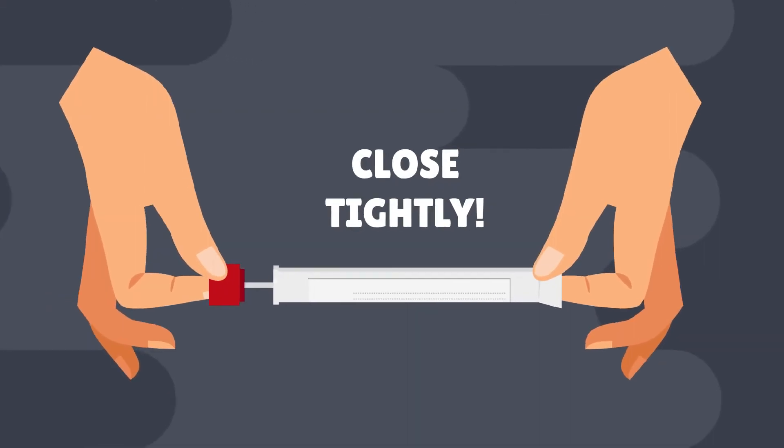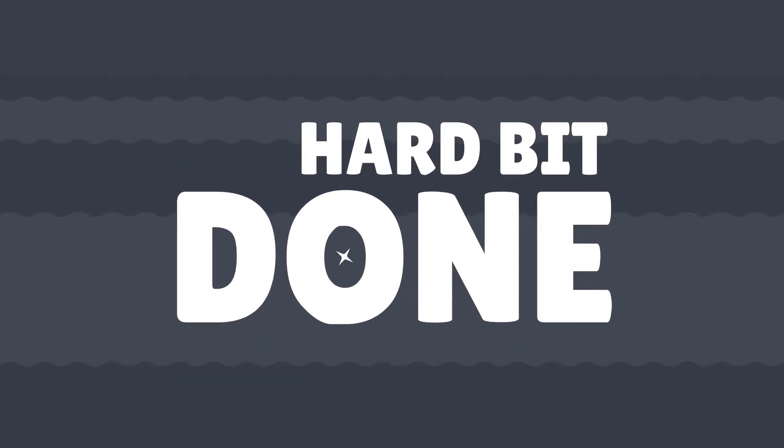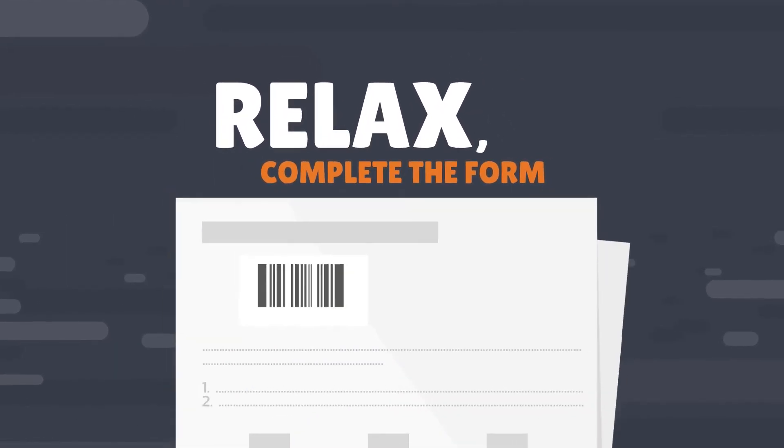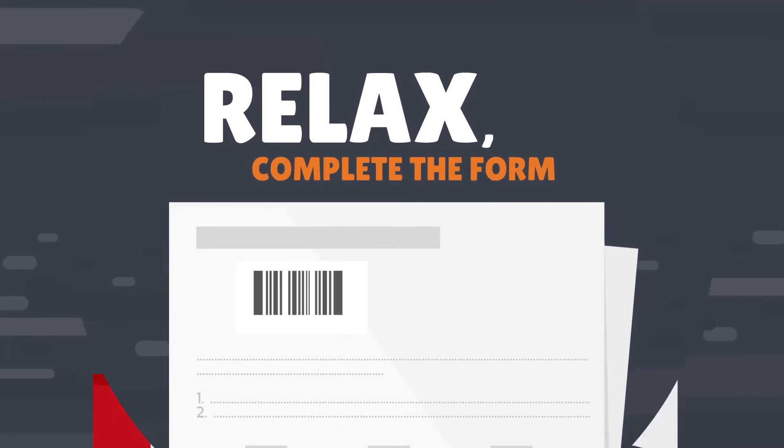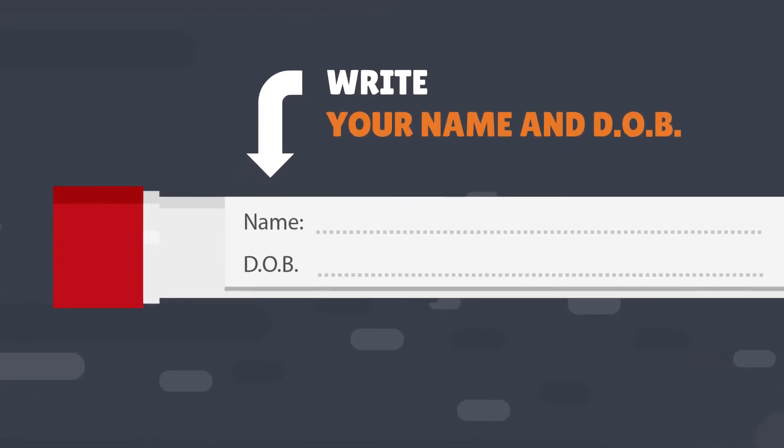Step 4. Place the used swab back in the tube and close tightly. That's the hard bit done. Now relax. Complete the form you found in the kit and write your name and date of birth on the swab tube.